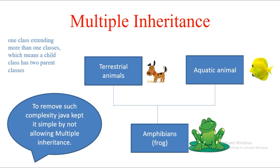For example, there is a frog which is both a terrestrial animal and an aquatic animal. Terrestrial animals have a nose to breathe and aquatic animals have gills to breathe. When those two parents have the common method of how to breathe, the child gets confused as to which particular implementation to take. In the real world they use both, but this is not allowed with Java classes.